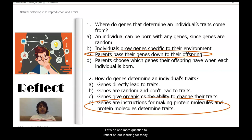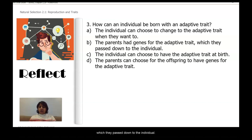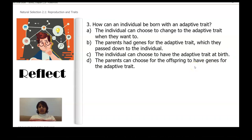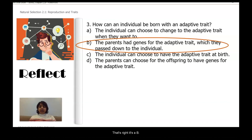Let's do one more reflection question. How can an individual be born with an adaptive trait? A — the individual can choose to change the adaptive trait when they want to. B — the parents had genes for the adaptive trait which they passed down to the individual. C — the individual can choose to have an adaptive trait at birth. Or D — the parents can choose for the offspring to have genes for the adaptive trait. That's right, it's B: the parents had genes for the adaptive trait which they passed down to the individual.